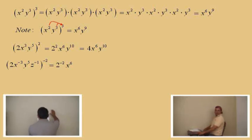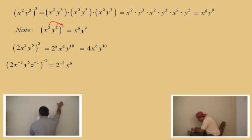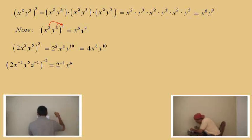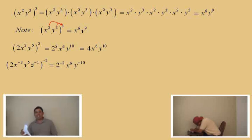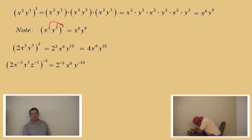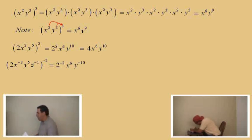Y to the fifth raised to the negative two — Charlie, that's y to what power? Negative ten. Okay, bring us home with that z: z to the negative one raised to the negative two is z to what power, Charlie? Positive two. There we go.